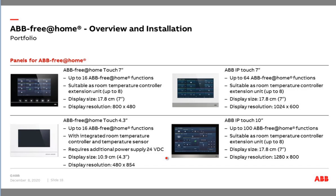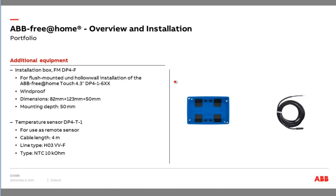The newest devices in this family are the ABB Touch 7 inch and the ABB Touch 10 inch panel, coming from our Welcome IP portfolio family. The 7 inch panel can control up to 64 functions, and the 10 inch panel up to 100 functions. Importantly, these are the gateway between Free at Home and our Welcome IP system — if you have a project using Welcome IP and Free at Home together, you have to select one of these panels. For the panels, additional equipment is available such as mounting boxes. For the 4.3 inch Free at Home panel you can also add an additional temperature sensor.